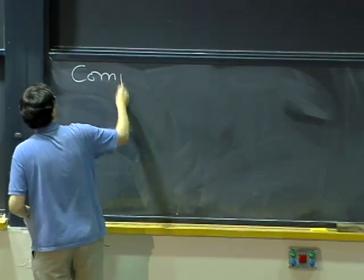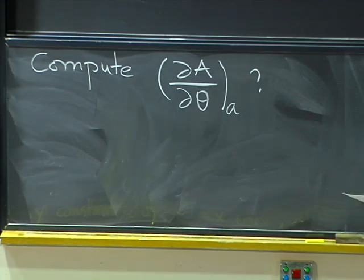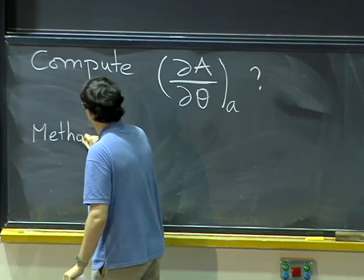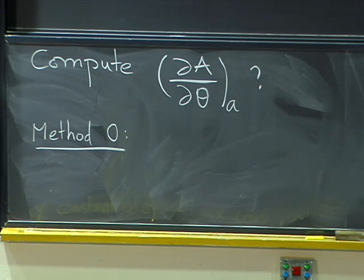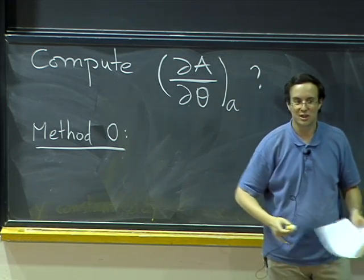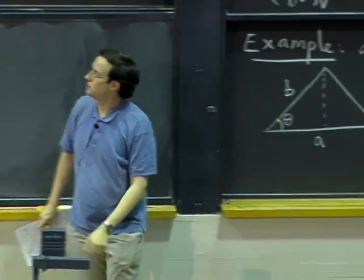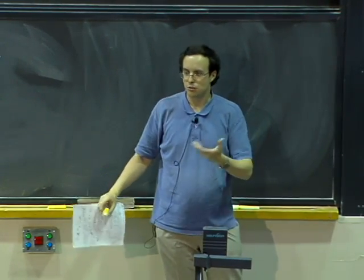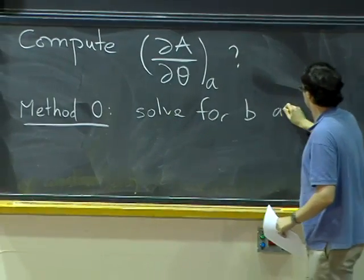Let's try to compute partial A partial theta with a held constant. Let's see three different ways of doing that. Method zero is not a real method — that's why I'm not giving it a positive number. That one is just: we solve for b and remove b from the formulas. Here it works well because we know how to solve for b. But I'm not considering this a real method because in general we don't know how to do that.